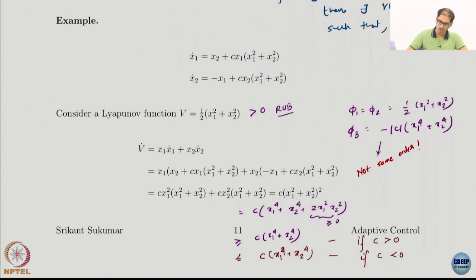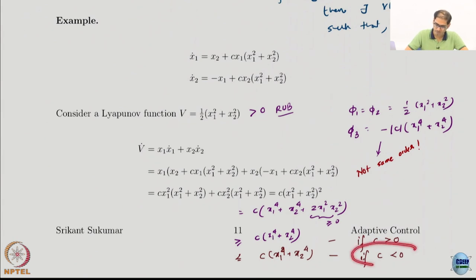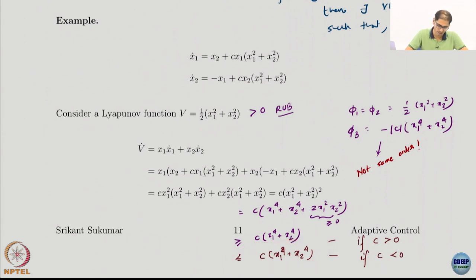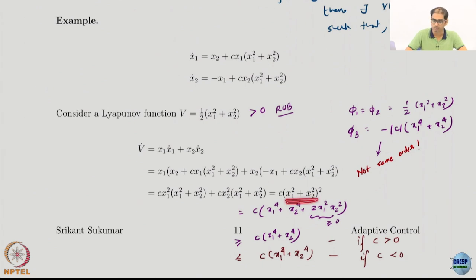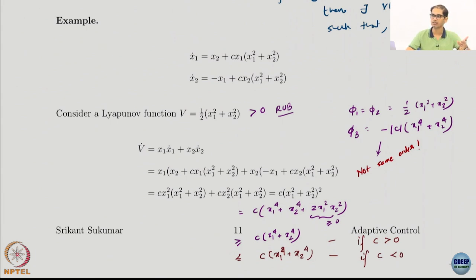It should be obvious that depending on the sign of c I will get some definiteness. If c is negative, I get negative definiteness — V-dot is negative definite. Note that (x1²+x2²)² cannot be zero anywhere but at the origin, so it is a positive definite function. If c is just a negative constant, then V-dot is negative definite and we have asymptotic stability.